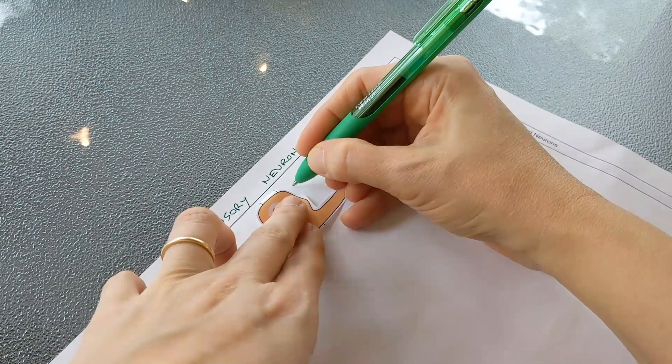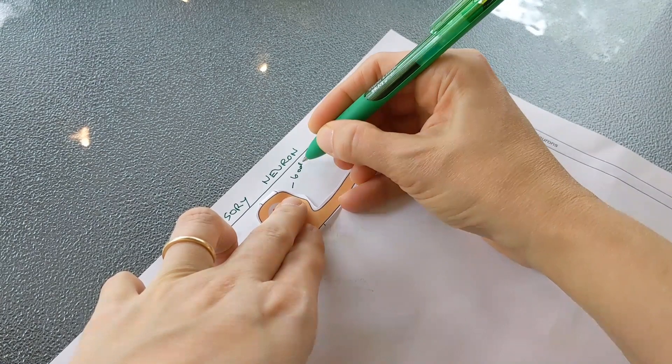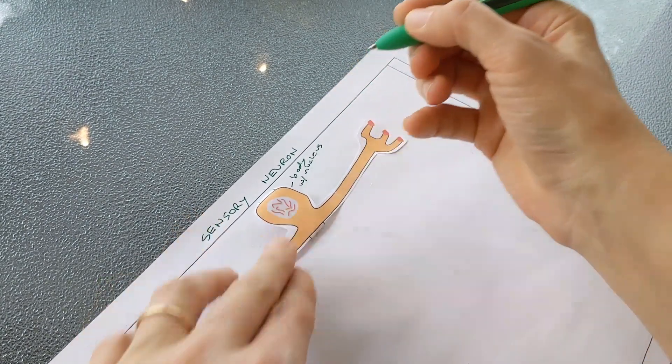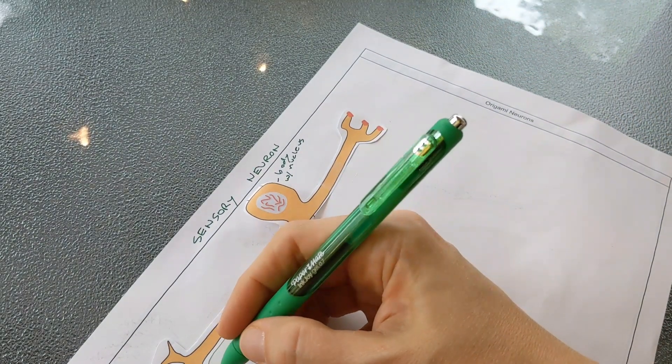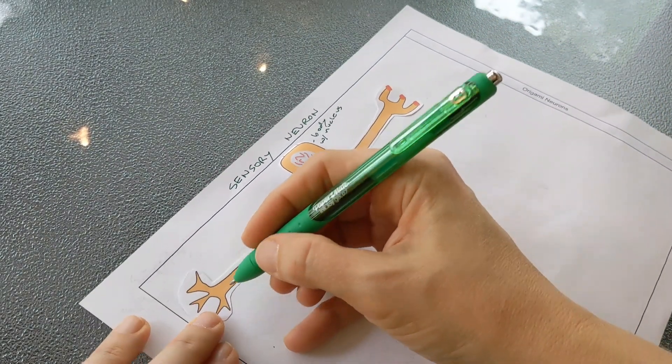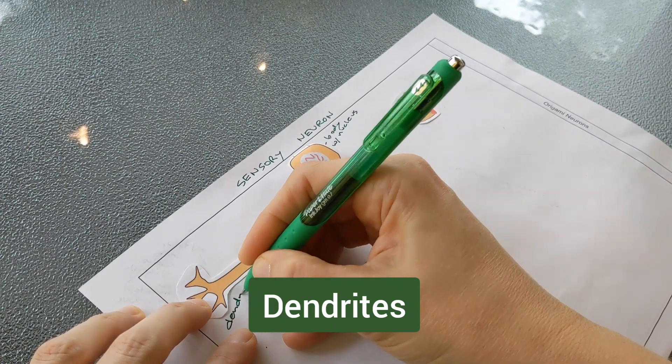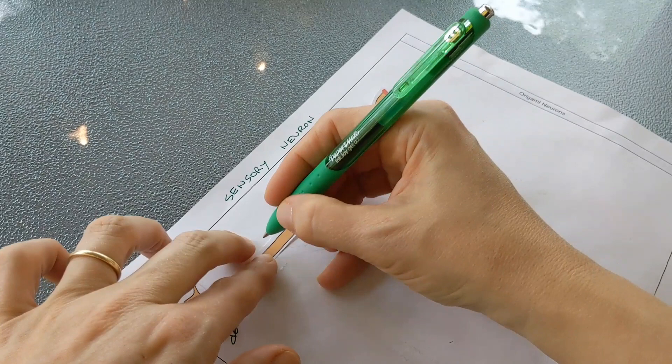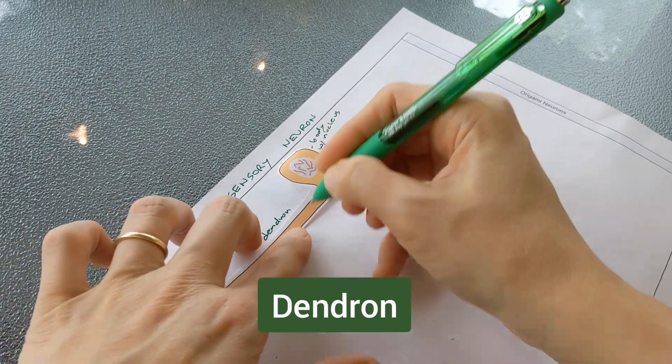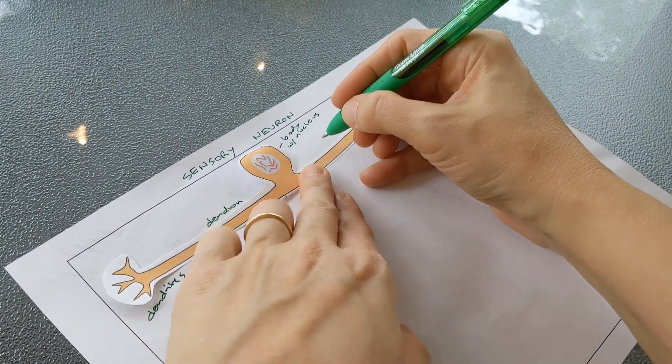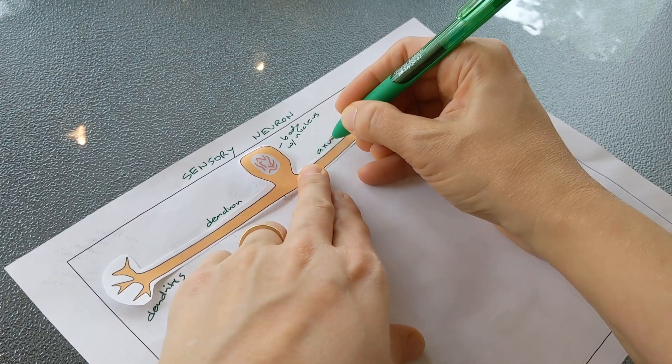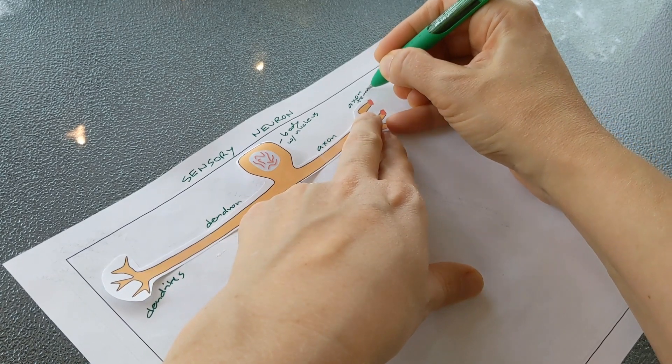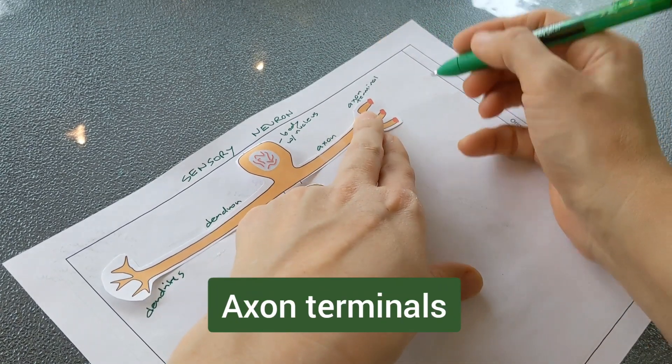And we'll label the parts. This is the cell body and inside is the nucleus with the chromosomes. This is the start of the neurons so you can see the branching - those are the dendrites. And the first part of this is called the dendron because it's leading up to the cell body. And then once we get past the cell body that's called the axon. And here we have the axon terminal - terminal meaning end - so these are the end of that neuron.